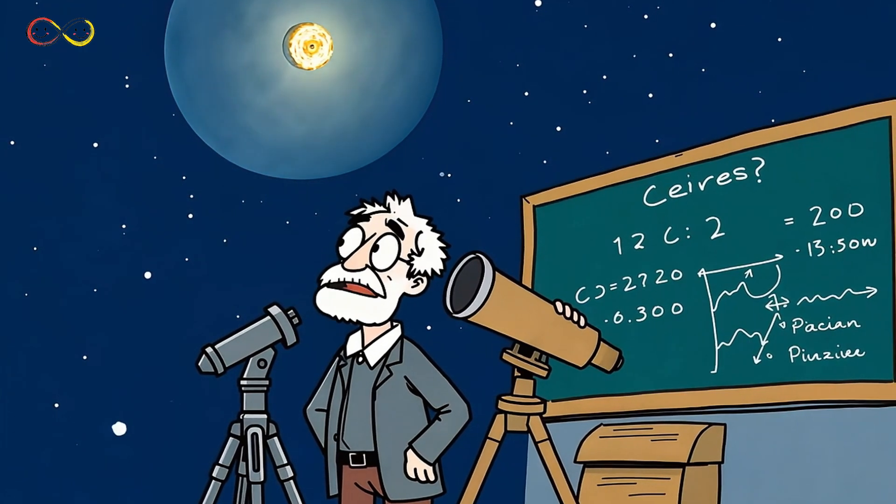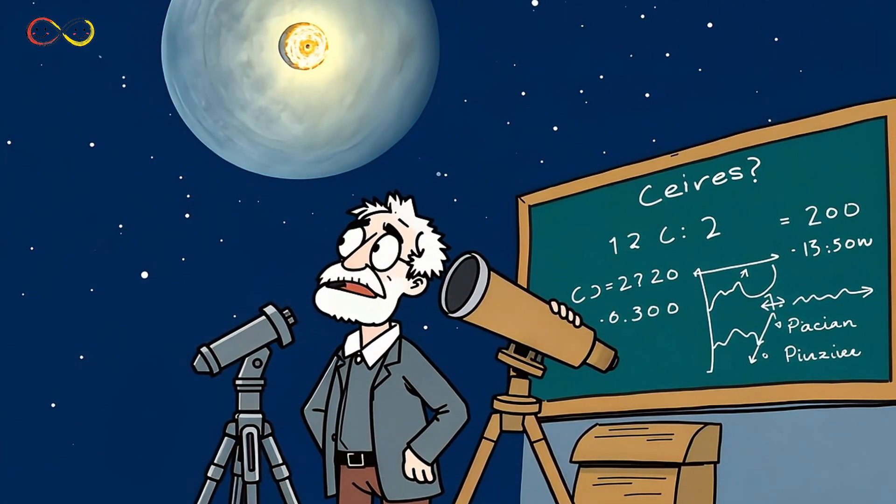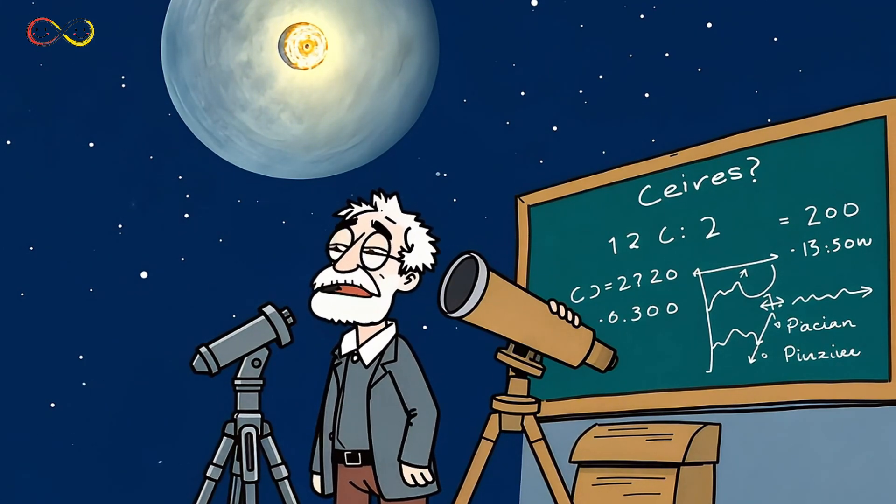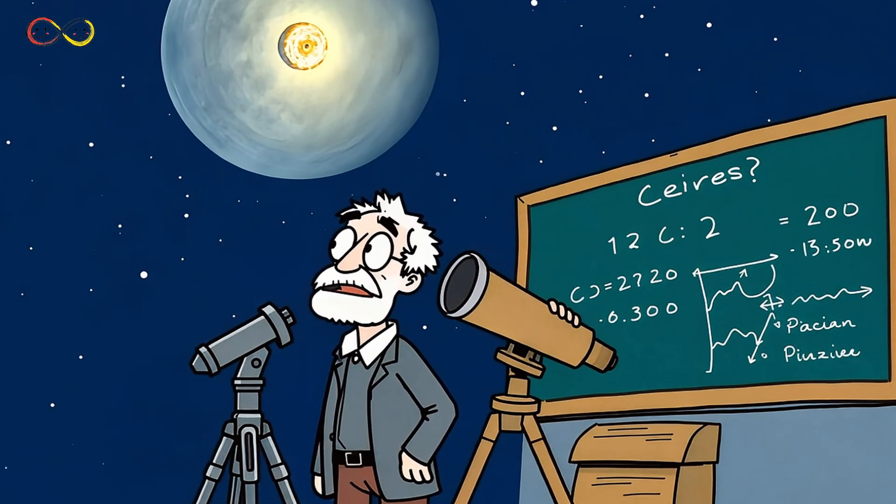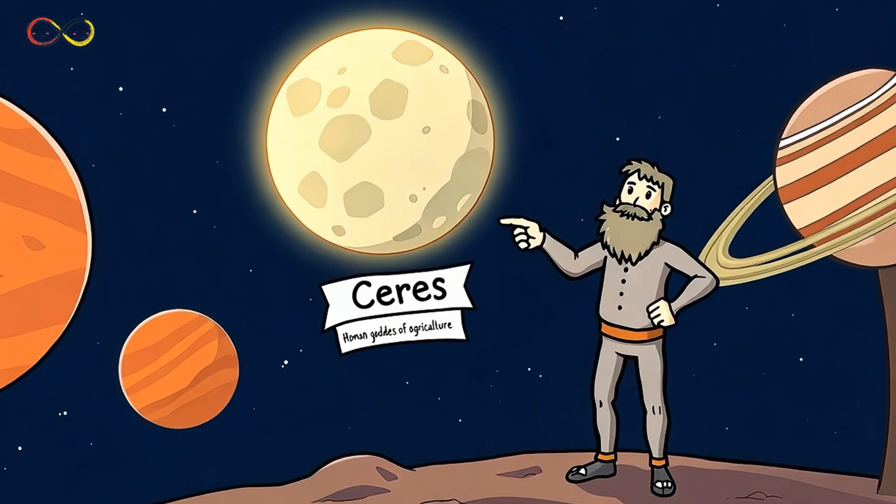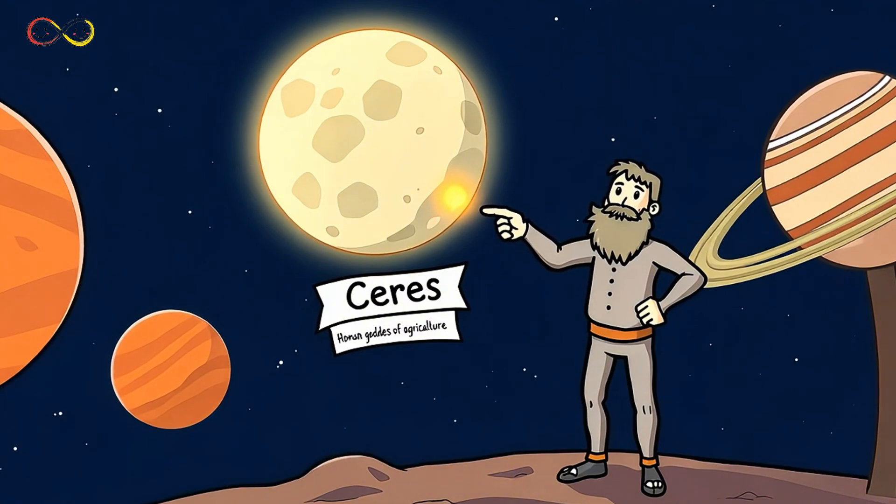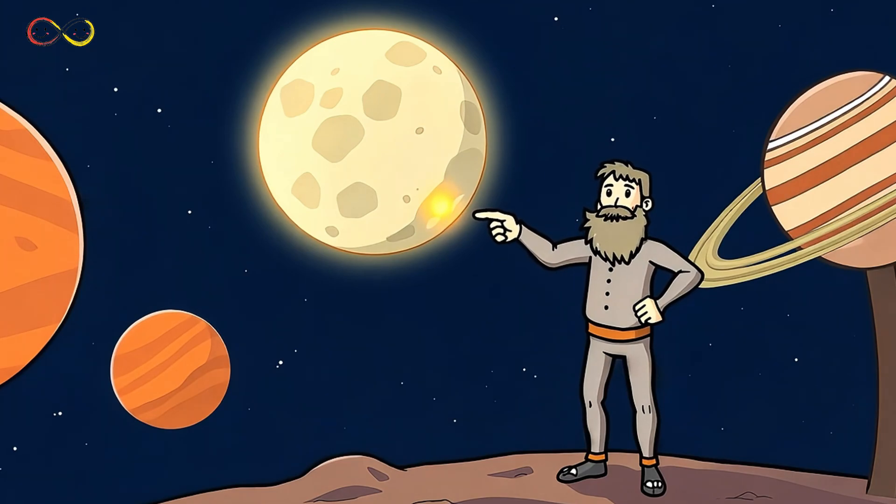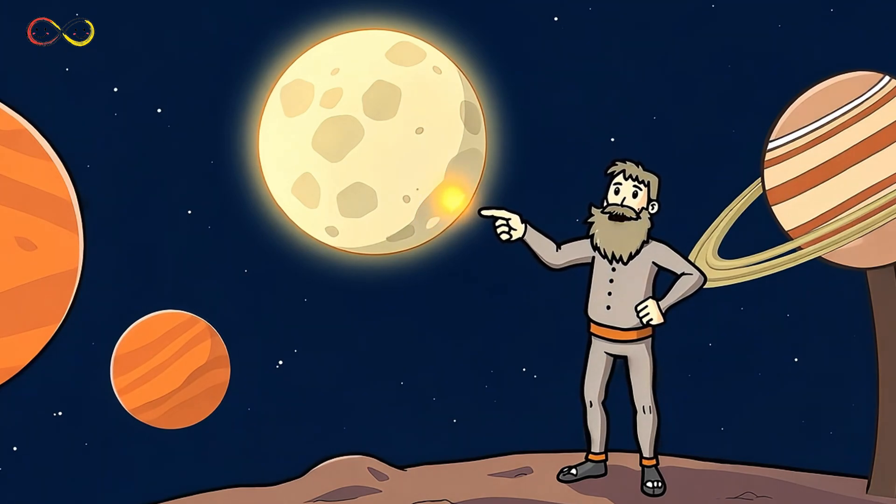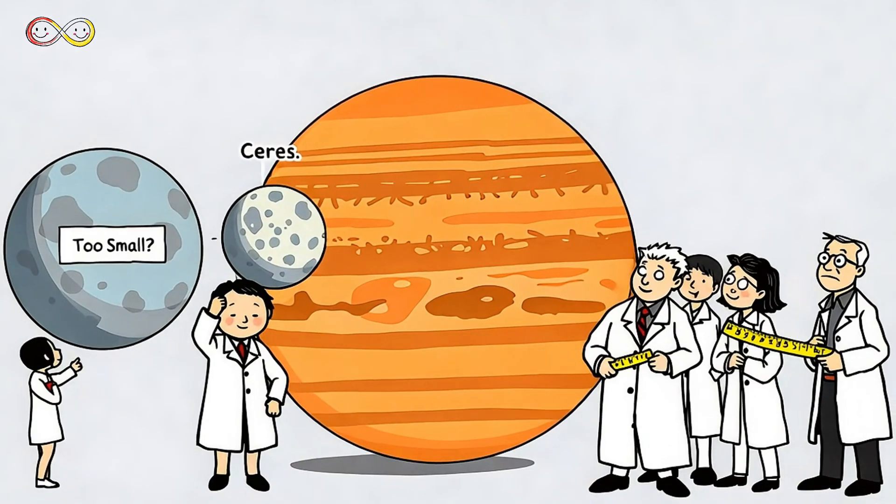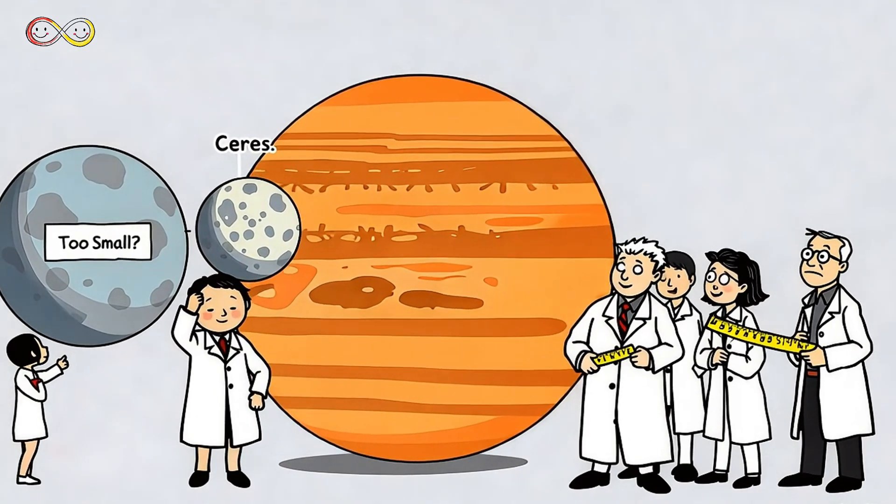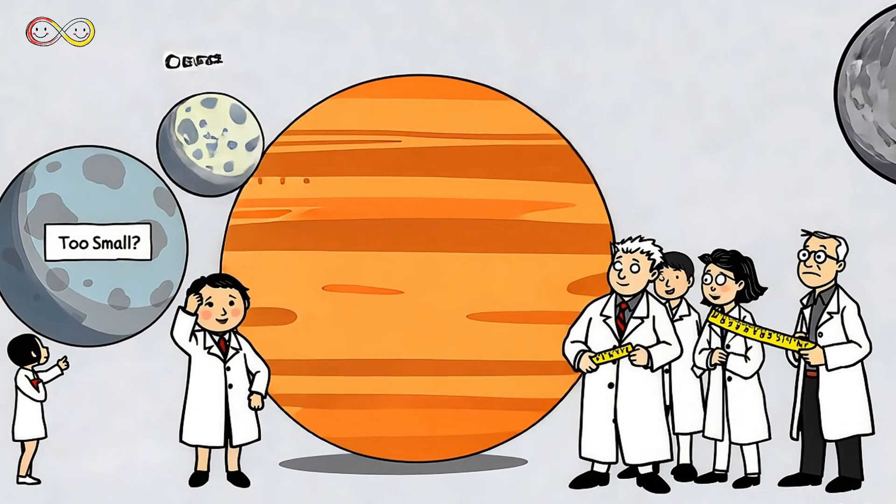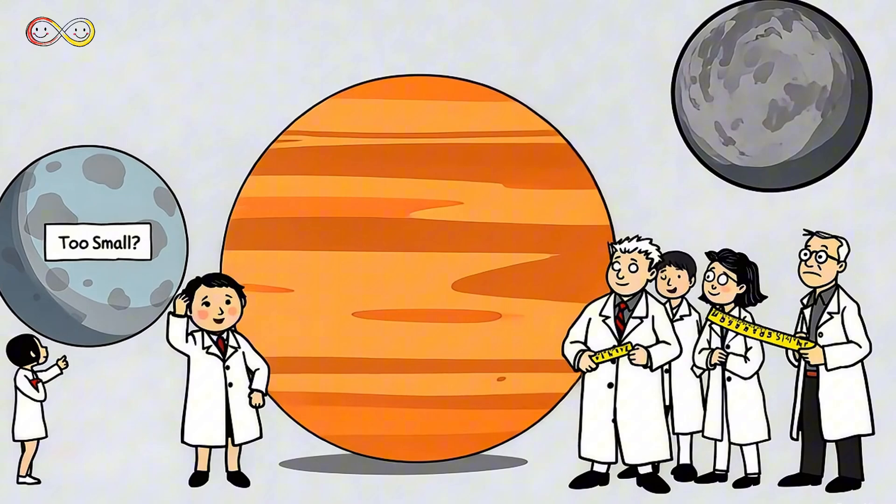In the year 1801, astronomer Giuseppe Piazzi was searching the sky when he noticed something unusual. It wasn't a star, and it wasn't a planet. He carefully observed it night after night, realizing he had found something new. Piazzi decided to name his discovery Ceres, after the Roman goddess of agriculture. Scientists were thrilled. Had they finally found the missing planet? As scientists studied Ceres, they realized it was much smaller than expected. Something didn't add up.